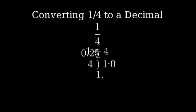Now, we can perform the division. Four times zero point two five equals one. One minus one equals zero, so we have no remainder.